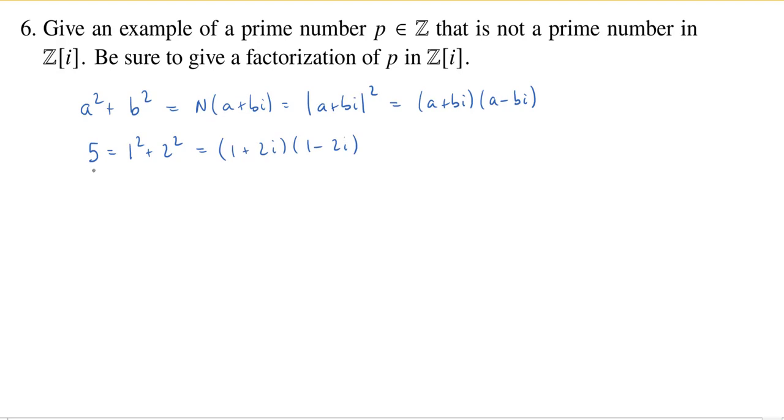So we've now given an explicit factorization of the prime 5, prime in the integers, into a product of non-units. We know in the Gaussian integers, the only units are ±1 and ±i. So these are non-units. So this is a factorization in ℤ[i]. Therefore, we conclude 5 is not prime in the Gaussian integers.